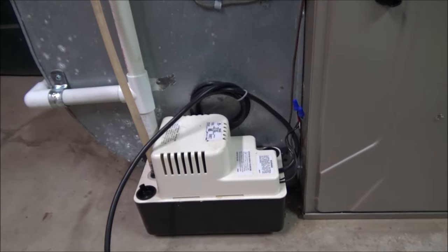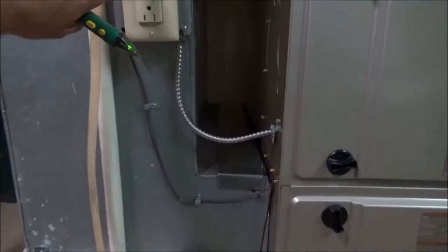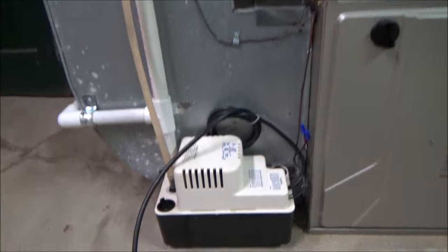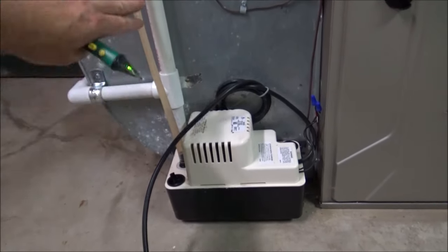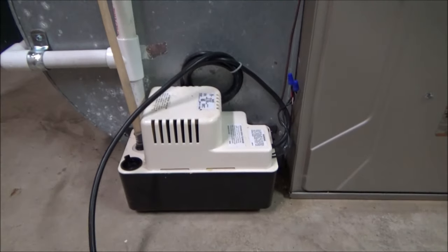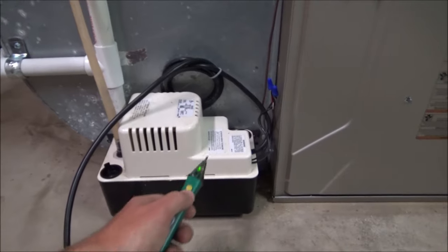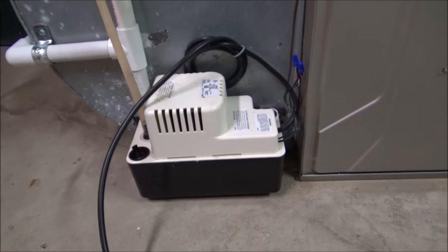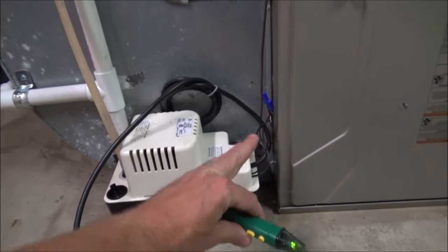To make sure there's no power running to this at all, you want to shut off the furnace. You want to shut off the furnace anyways because you don't want it draining water once you disconnect the pump from the tubing. Now that the furnace is off, these aren't hot anymore. So now we're good to go to disconnect this from the safety switch wiring.